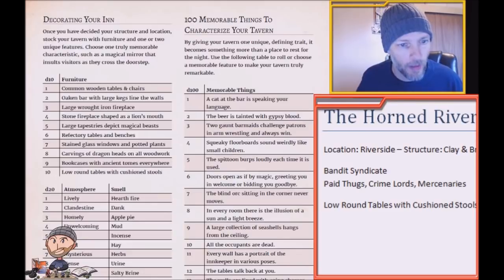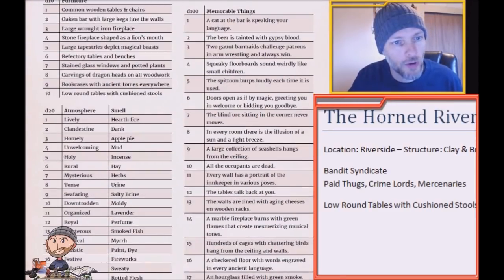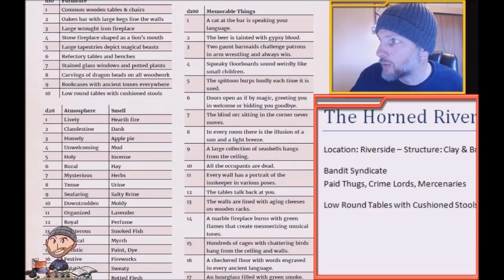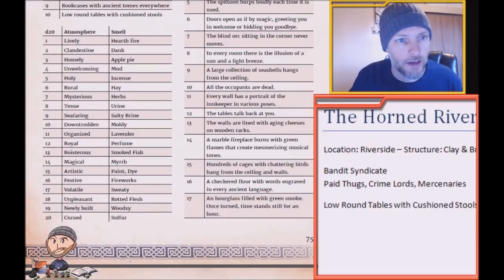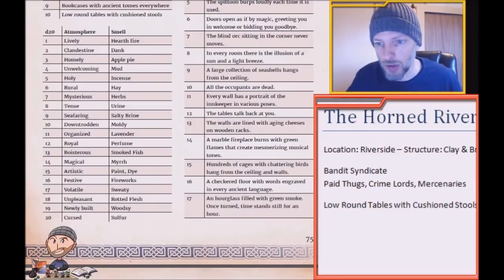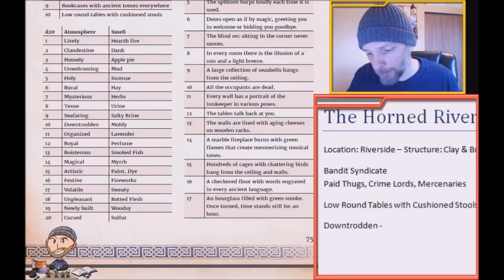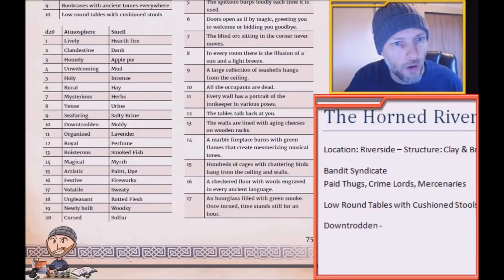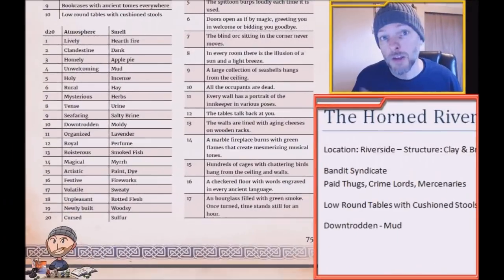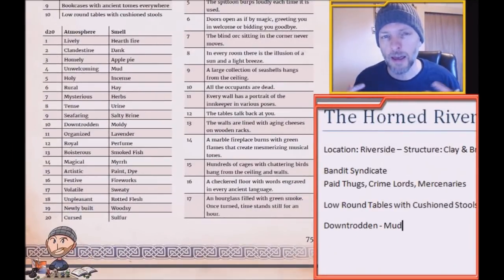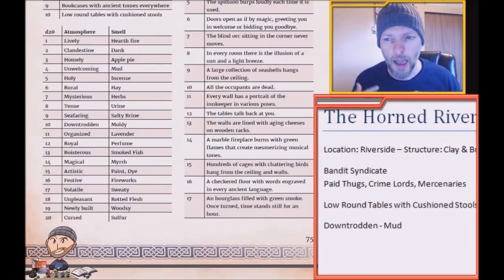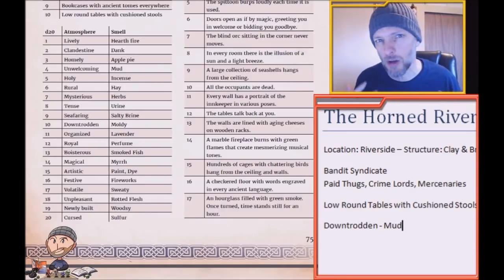Now we're going to add atmosphere and a smell. Our d20 gives us a 10 — downtrodden — and for the smell, a four — smells like mud. So we can kind of see the Horned River getting a little bit of personality: it's got some low-life people in there — thugs, crime lords, and mercenaries — with low round tables and cushioned stools, but since the place is downtrodden it smells like mud.